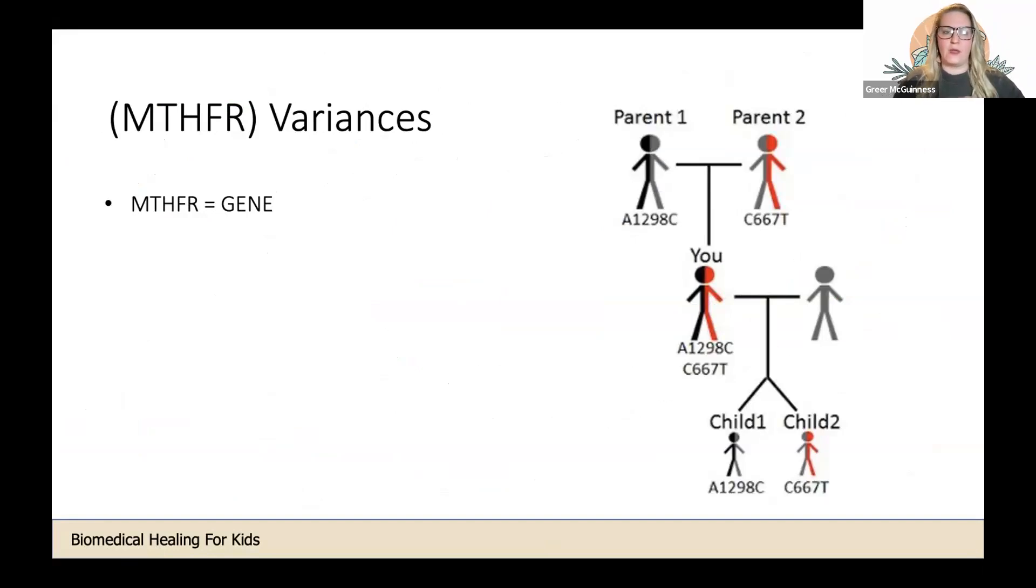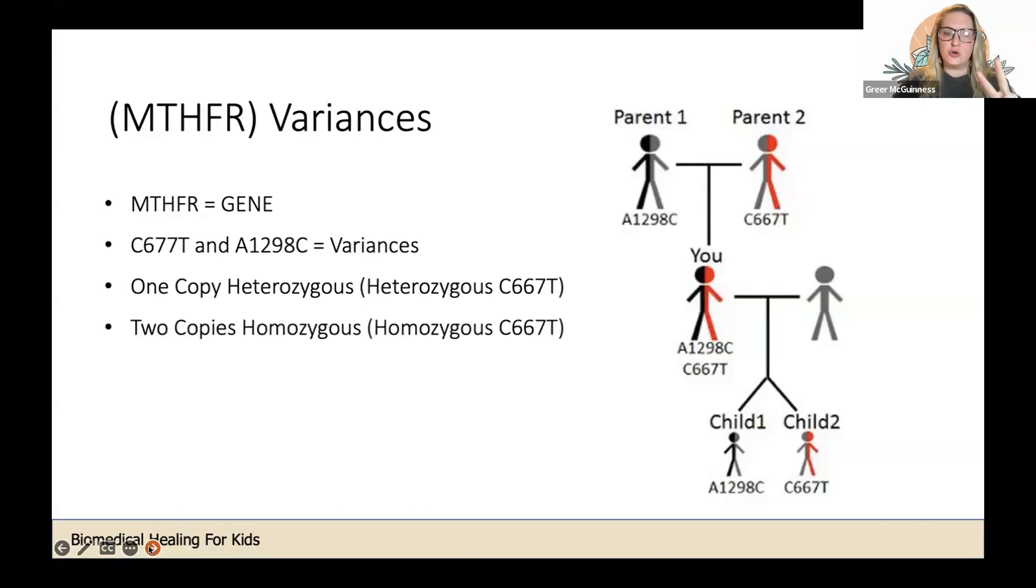MTHFR is a gene. The variances are the different types of that gene. We have two different types of variances that someone can have: the C677T or the A1298C variant. That gets broken down again where you could have just one copy of one of those variances, which we classify as heterozygous, or you could have two copies of that variance, which is homozygous.